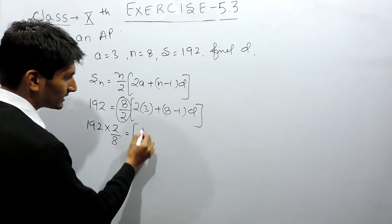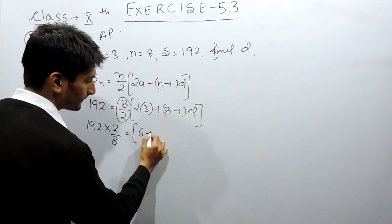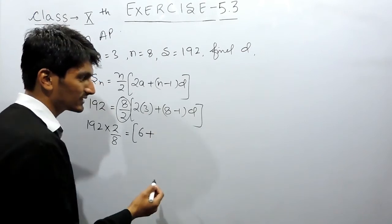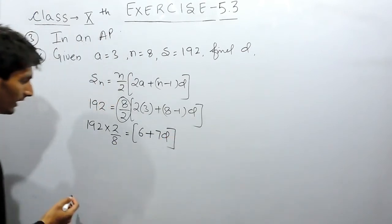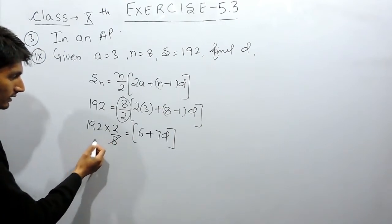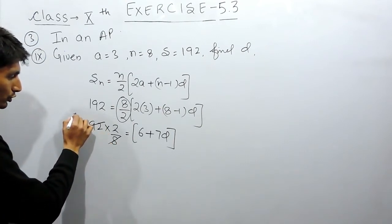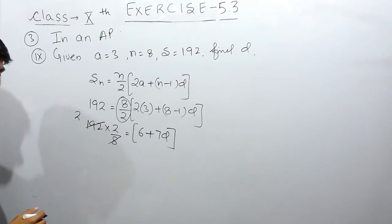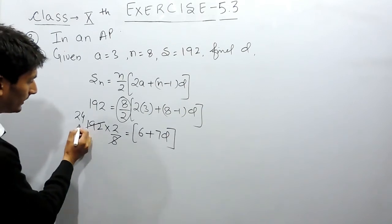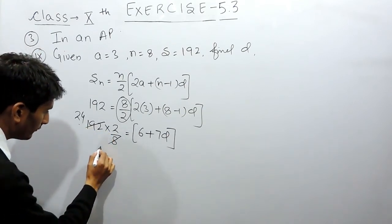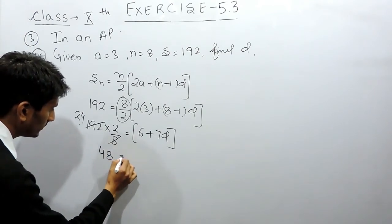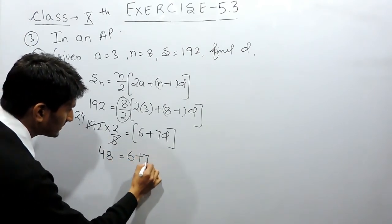Now on the right hand side, this will become 6. This is 8 minus 1 is 7 and this is 7D. Now this is 8, 2 times 16 and 8, 4 times 32. And this will become 24 into 2 is 48.